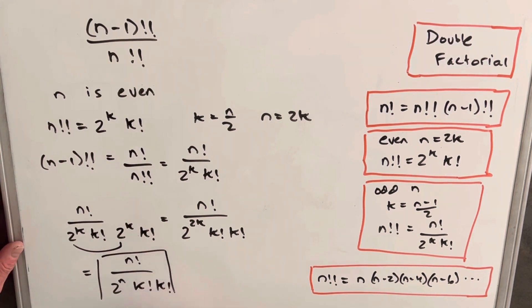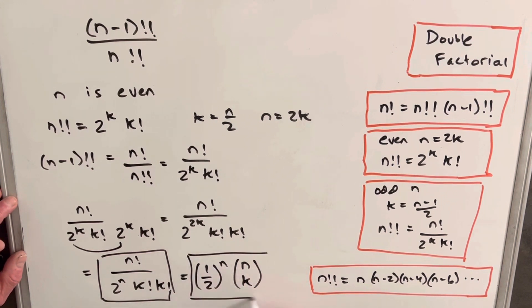And this here is fine, but what we can do is we can do a little shorthand, and we can write the 1 over 2 to the n as a half to the n. And then you'll notice n factorial over k factorial times k factorial is actually the definition of n choose k for the binomial coefficient. So you can use this expression as well.